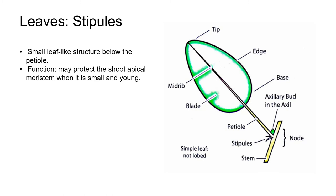Some plants have leaf-like or scale-like structures growing immediately below the point of attachment of a petiole or leaf. These are called stipules and they're usually green. The presence or absence of stipules isn't important in propagation but can be important in plant identification. Stipules are very common in plants in the rose family such as roses, apples and pears, and it's thought that the function of stipules is to protect the shoot's apical meristem when it's small and young.